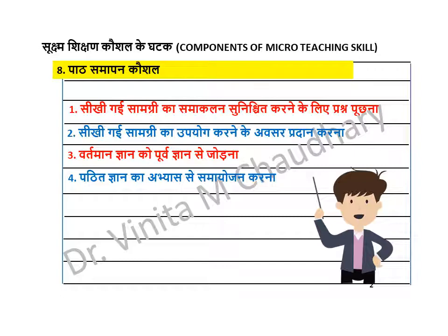Ek uchit samaapan na keval paath ki saamagri ke baare mein ek vichaar deta hai, balki chhatron ko paath ke samaapan ke liye taiyaar karne mein madad karta hai. To achieve proper closure, the teacher can focus on four components. Hamara pehla ghatak hoga: asking questions to ensure integration of the content learned — seekhi gayi saamagri ka saamaakalan sunishchit karne ke liye prashn poochna.